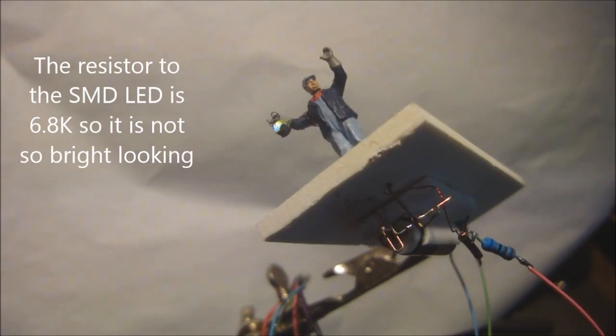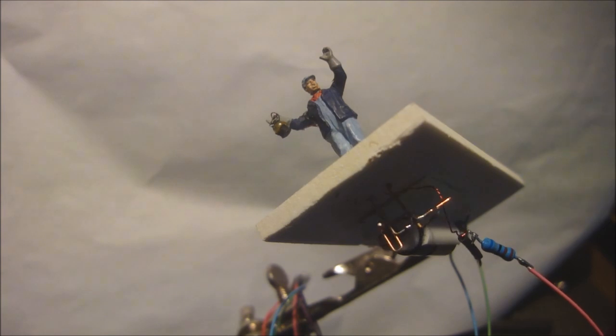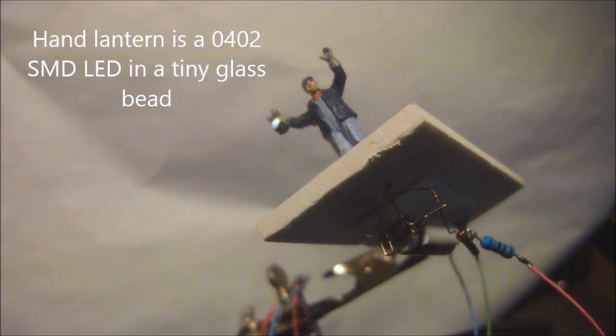This is the yard man waving his lantern. I can turn his hand lantern on or off, and he's got a little bit of head movement there. You can see the yoke which I'm talking about.